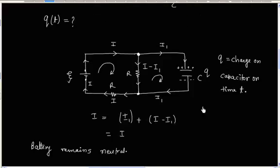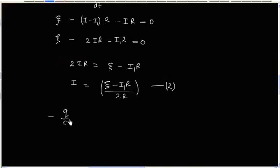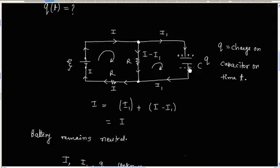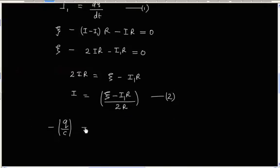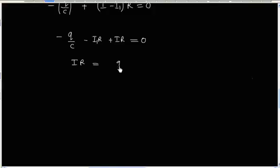We write a third equation for the inner loop containing the capacitor. Starting from the positive plate of the capacitor and going to the negative plate gives a potential drop of minus Q by C. There is no resistor on the capacitor branch. Going opposite to the direction of current I1 through the resistor gives a plus sign, so we add plus I1R. Setting equal to zero: minus Q by C plus I1R minus (I minus I1)R equals zero, giving IR equals Q by C plus I1R. This is equation 3.